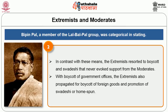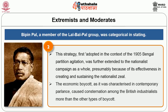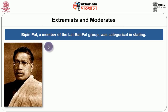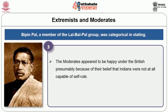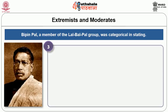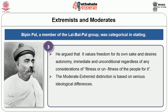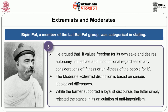Simultaneously with the boycott of government offices, the extremists also propagated boycott of foreign goods and promotion of Swadeshi or homespun. This strategy, first adopted in the context of the 1905 Bengal partition agitation, was further extended to the nationalistic campaign as a whole, presumably because of its effectiveness in creating and sustaining nationalistic zeal. The economic boycott caused consternation amongst British industrialists more than other types of boycott. Thirdly, the moderates appeared to be happy under the British, presumably because of their belief that Indians were not capable of self-rule. The extremists' views were diametrically opposite to this idea. Furthermore, the extremists valued freedom for its own sake and desired autonomy, immediate and unconditional, regardless of any considerations of fitness or unfitness of the people for it. The moderate and extremist distinction is based on certain ideological differences: while the former supported a loyalist discourse, the latter simply rejected that stance in their articulation of anti-imperialism.